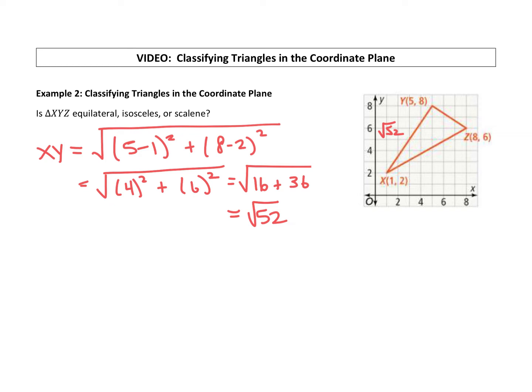All right, let's go ahead and find another side length, YZ. So Y to Z. I'm going to use these ordered pairs into the distance formula. We have the square root of, subtract your x's, 5 minus 8, squared, plus subtract your y's, 8 minus 6. Then 5 minus 8 is negative 3, squared. 8 minus 6 is 2.